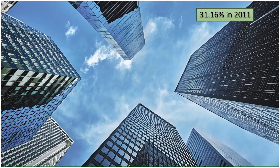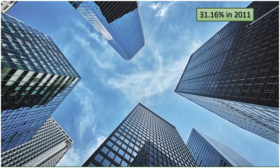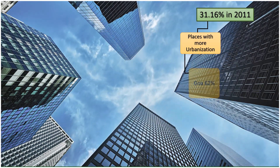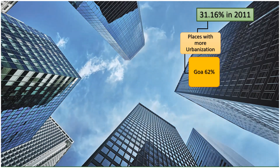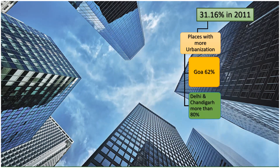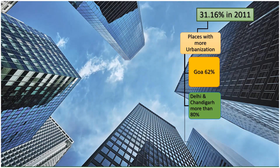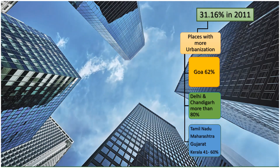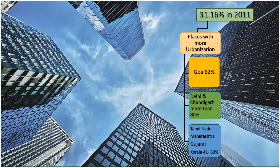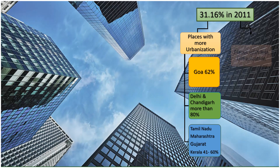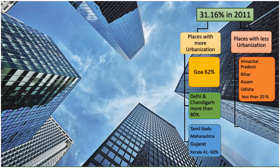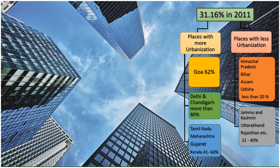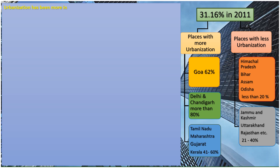The level of urbanization in 2011 in India was 31.6%. Places with more urbanization include Goa, which has 62% of population living in urban areas, and Delhi and Chandigarh, which have more than 80%. States like Tamil Nadu, Maharashtra, Gujarat, and Kerala have urban population between 41 to 60%. Places with less urbanization are mostly northern states like Himachal Pradesh, Bihar, Assam, Odisha, Jammu and Kashmir, Uttarakhand, and Rajasthan.